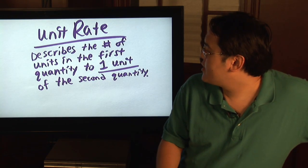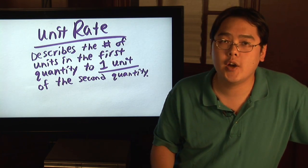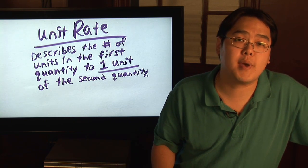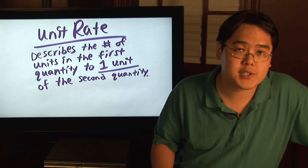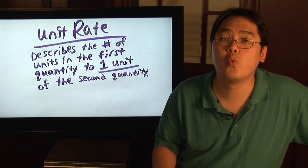A unit rate describes the number of units in the first quantity to one unit of the second quantity. So in other words, the first thing that you're comparing can have as many, as large a number as it wants, but the second quantity that you're comparing should only be one unit.